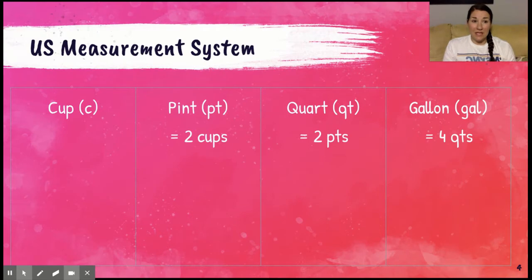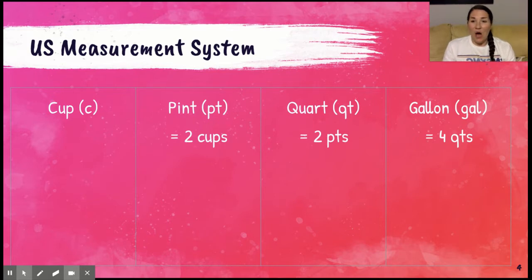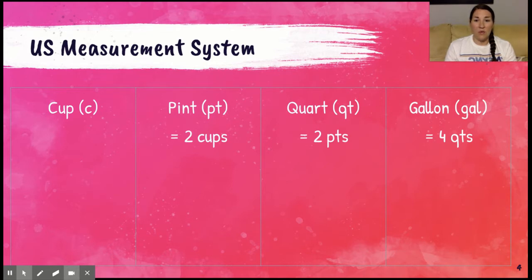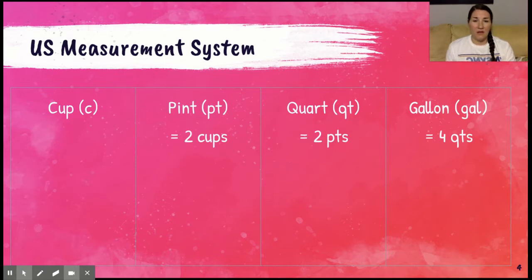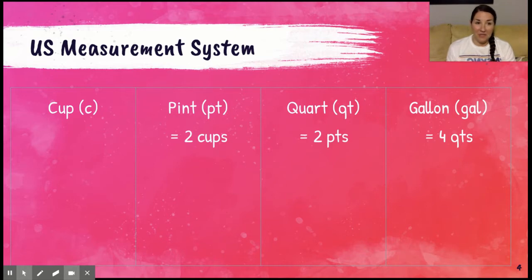Let's take a look first at volume in the US measurement system. We have four different units of measure: cup, pint, quart, and gallon. Cup is the smallest and it goes bigger all the way up to gallon. You'll see letters in parentheses — that's the abbreviated version. C is for cup, PT is for pint, QT is for quart, and GAL is for gallon.